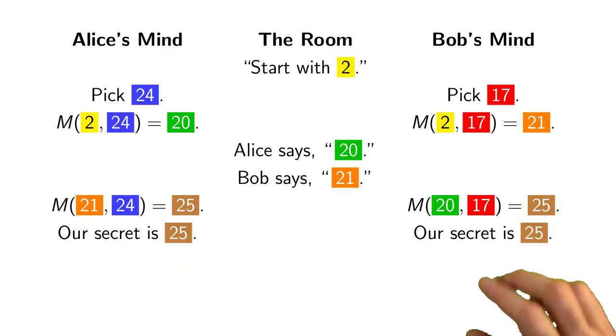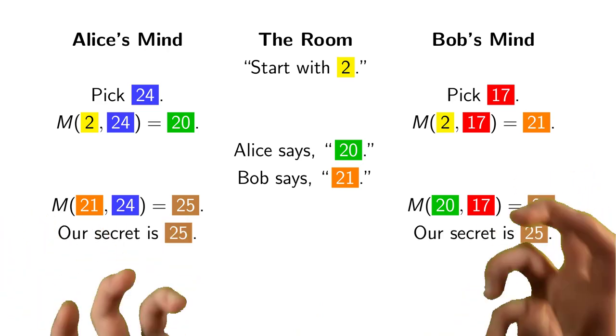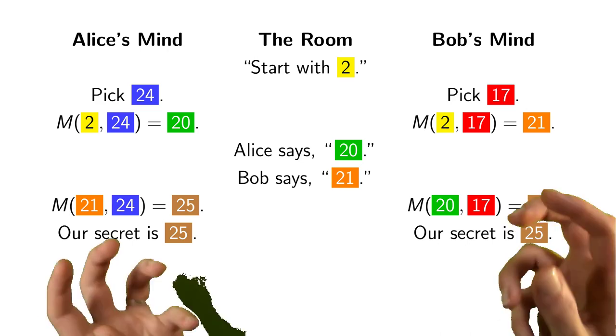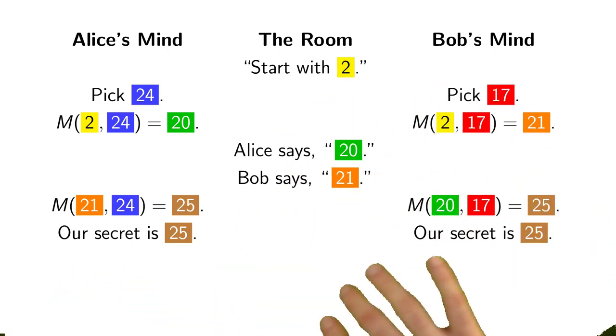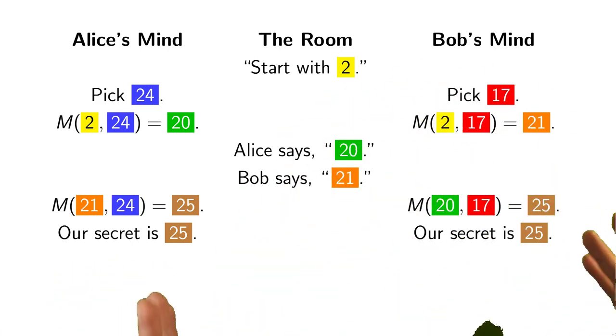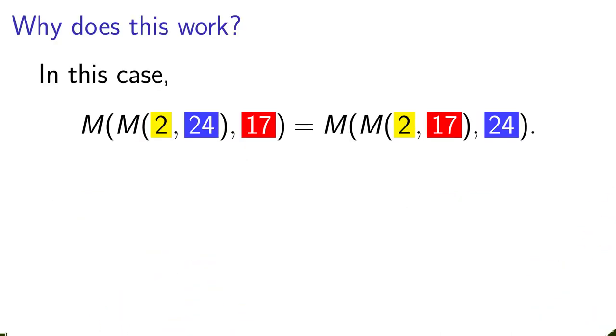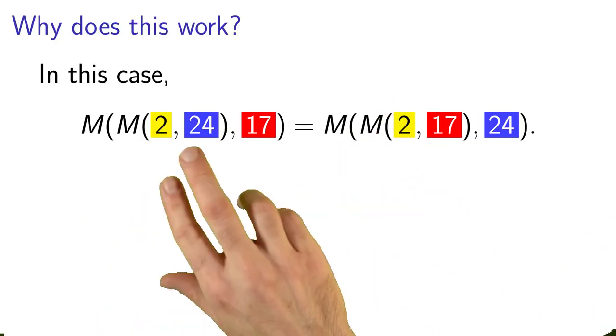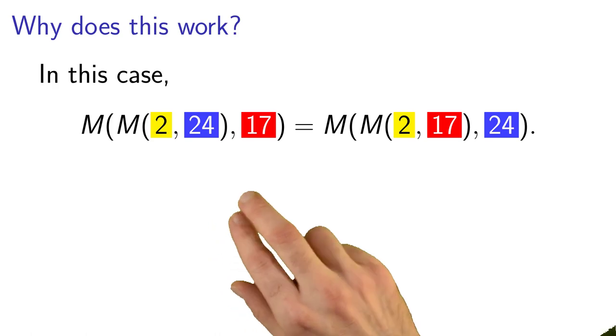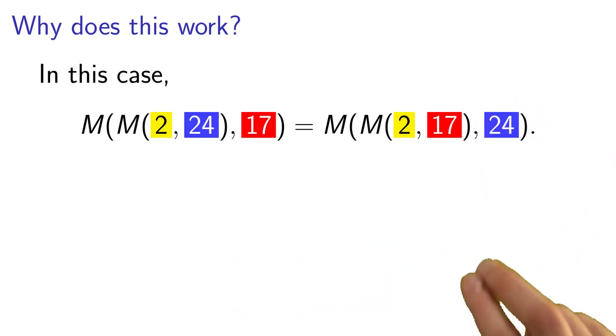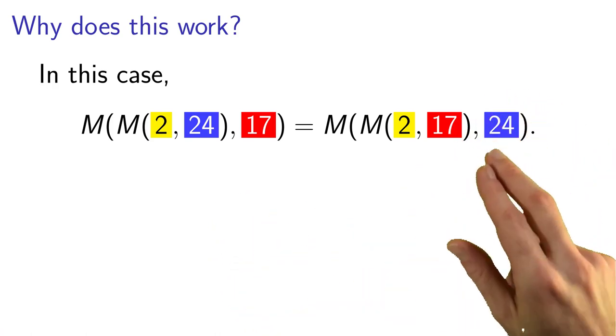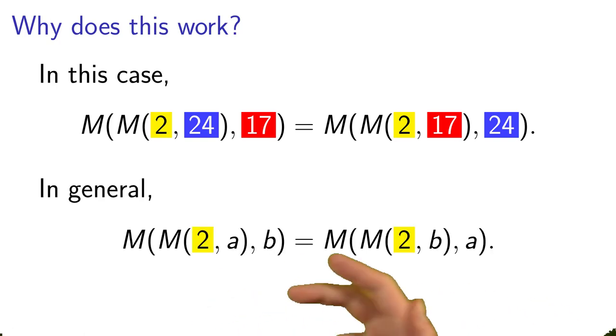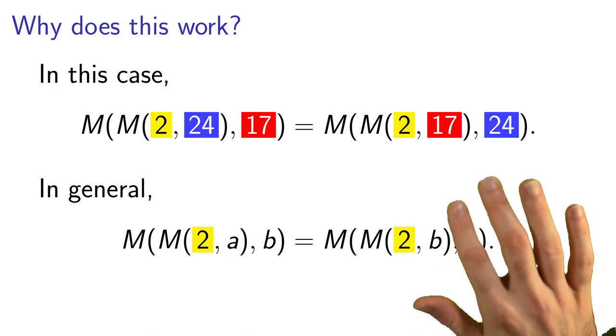And at this moment, Alice and Bob agree on the shared secret. They both agree that their secret is 25, even though nobody in the room could deduce that their shared number was 25. Well, the key thing here is that if I mix with 24 and then with 17, I get the same thing as if I mixed with 17 and then with 24.